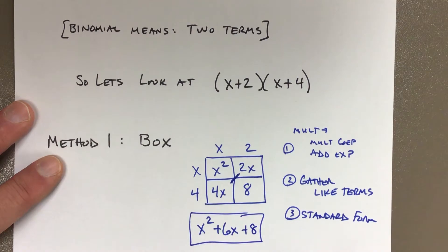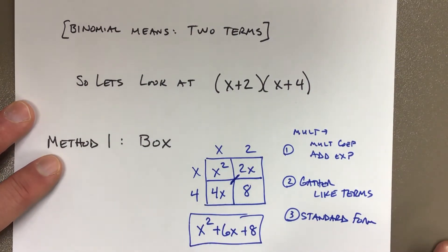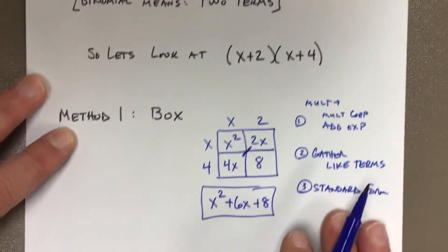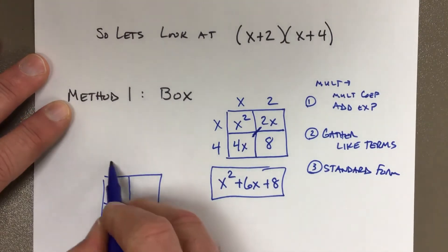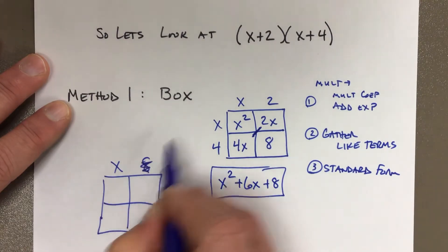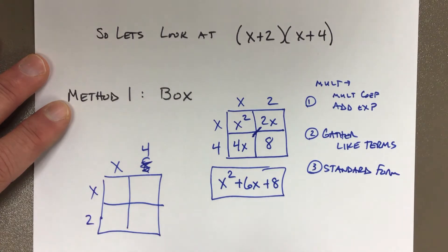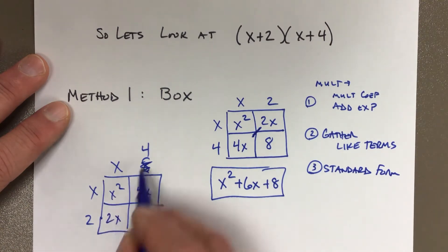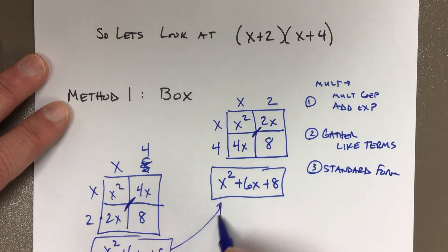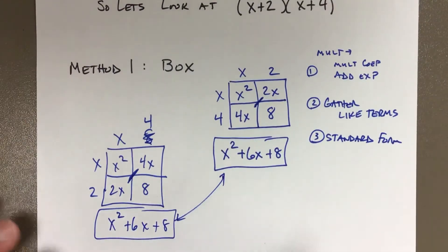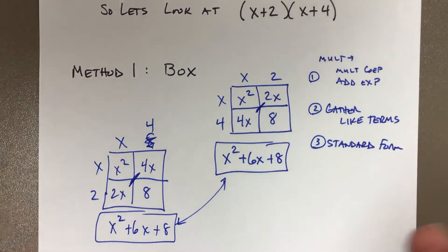Notice you're going to get a trinomial most of the time — sometimes the middle term does cancel out. The box method works regardless of arrangement. If you put x and 4 across the top and x and 2 on the side, x times x is still x squared, x times 4 is 4x, 2 times x is 2x, and 2 times 4 is 8. Same answer: x squared plus 6x plus 8. It doesn't matter which one's which.